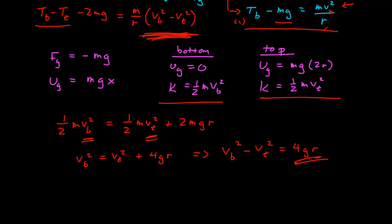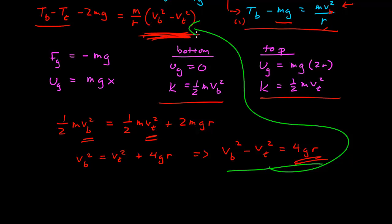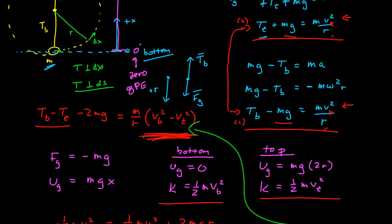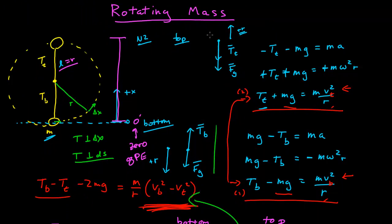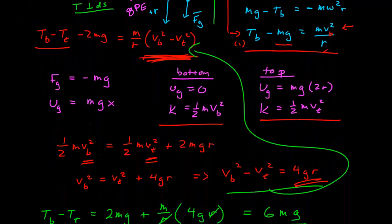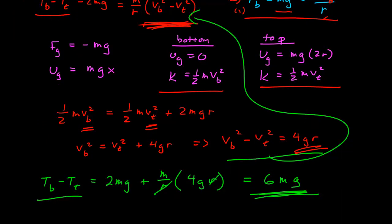Now I can plug this into the tension difference equation. T sub B minus T sub T equals 2mg plus m/r times 4gr. The r's cancel, giving 4mg plus 2mg, which equals 6mg. So the difference between the tension at the bottom and the top is 6 times the mass times gravity. To solve this we needed our circular motion knowledge, Newton's second law applied at both positions, and conservation of energy — which we could use because the only forces doing work were conservative.